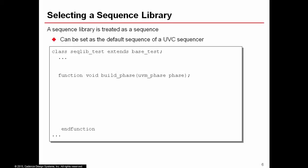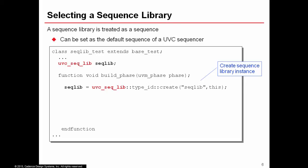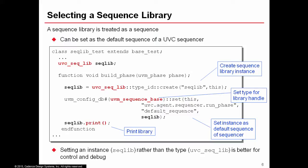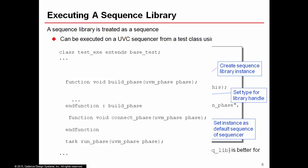A sequence library is treated like any other sequence. You can set it as the default sequence of a UVC sequencer. In the test class, create an instance of the sequence library using a factory create call, then use uvm_config_db set to set this instance seqlib as the default sequence of the ubc.agent.sequencer component. The type for the set command must be uvm_sequence_base to ensure the configuration setting is correctly matched. You can also print the library for debug — this is why we use an instance rather than a type inside the set command.